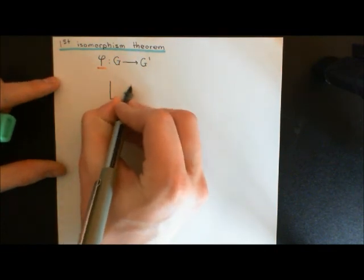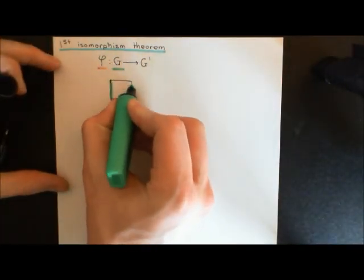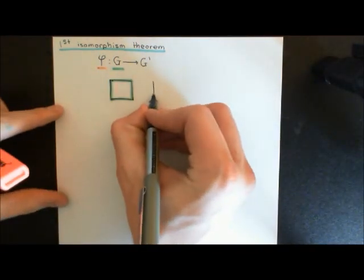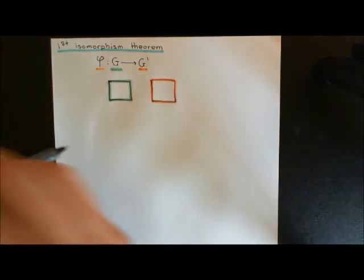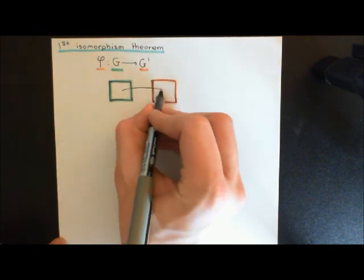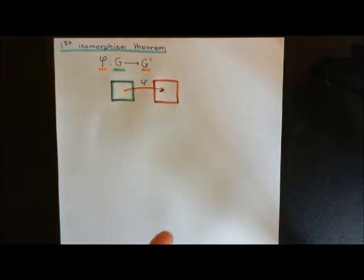So just to draw a picture of this, let's denote the set underlying our domain group capital G as this box, colour coded in green. Then we'll have our codomain group over here, also represented as a box, colour coded in red. Basically, this mapping is going to take every element in our domain group capital G and map it onto an element in our codomain group capital G prime. Surjective means every element in G prime will have at least one element in G being mapped onto it — it's an onto mapping.